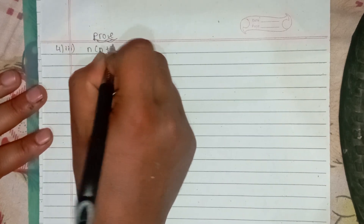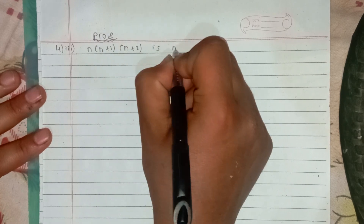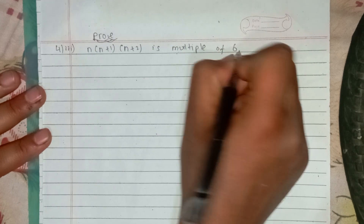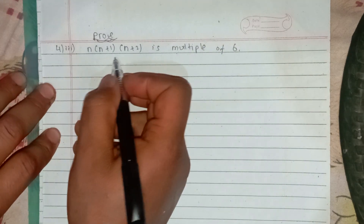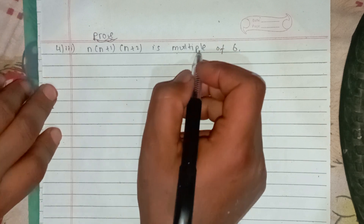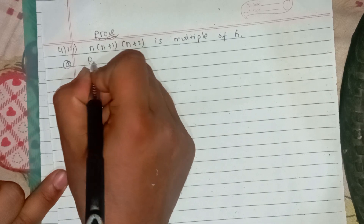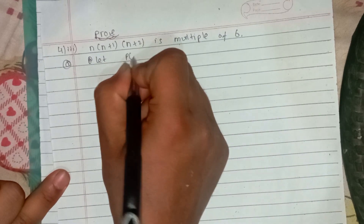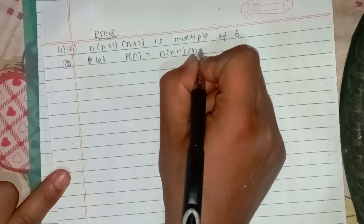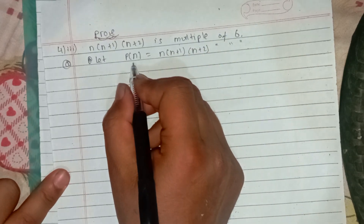The question is: n into n plus 1 into n plus 2 is a multiple of 6. We will use the induction method. The first step is to let P(n) be this statement: n into n plus 1 into n plus 2 is a multiple of 6. This statement is P(n).